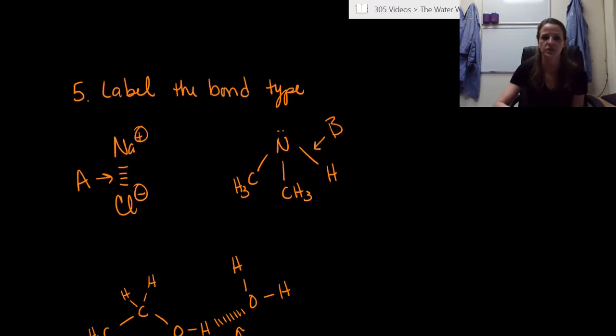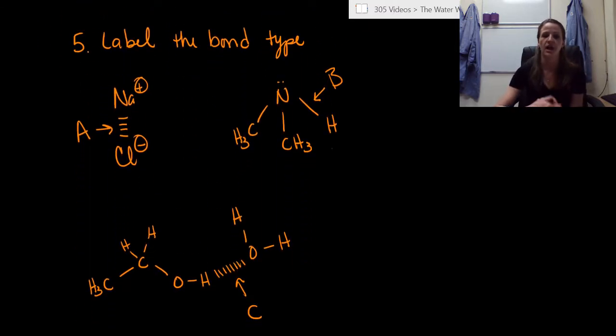And this is the last one actually. So I have three different types of bonds here. I have one A labeled, one labeled B, and one is labeled C. I want you to tell me what type of bond is that? Ionic, covalent, hydrogen, dative, something else, whatever it is, tell me.